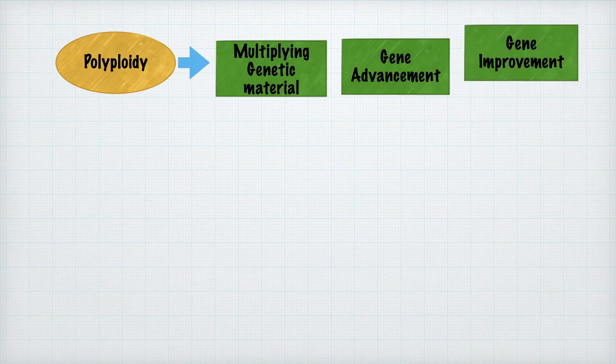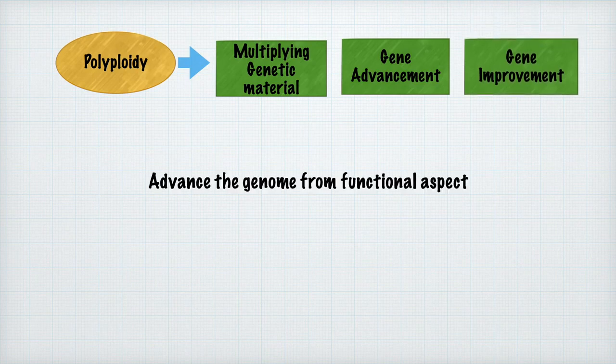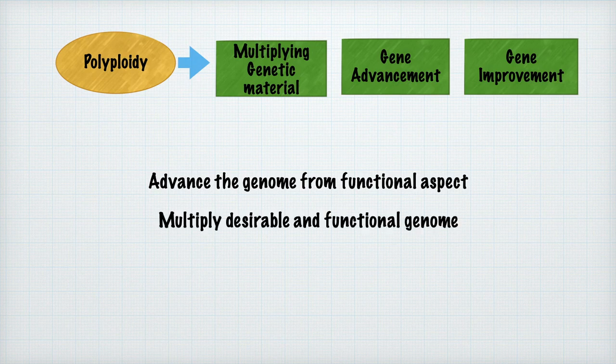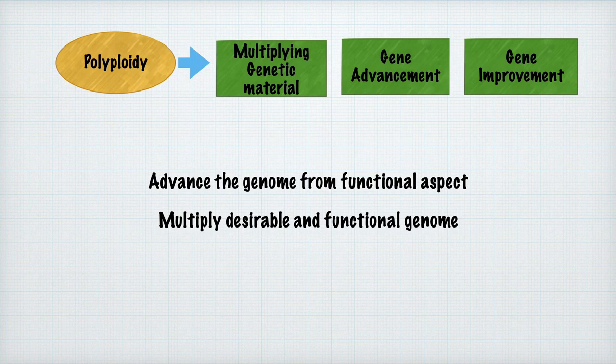For polyploidy, it works by advancing and improving the genetic model in plants, multiplying the desirable and functional genome so that desirable characteristics are multiplied and improved. For example, if a plant is known for high yielding, we can multiply that high-yielding gene so that we will have more production in the next generation.